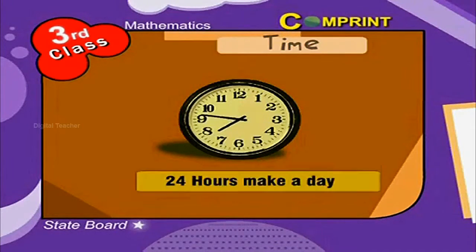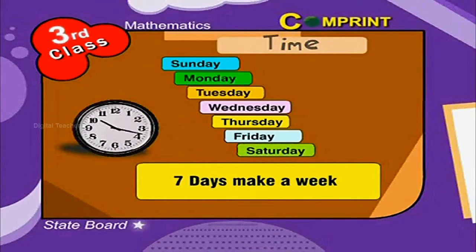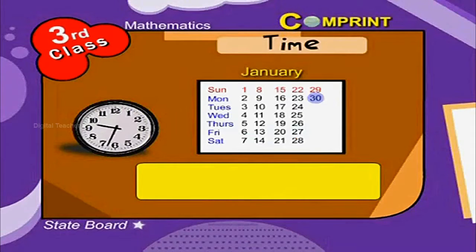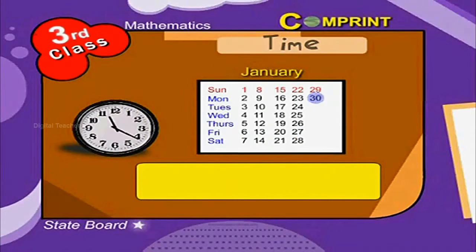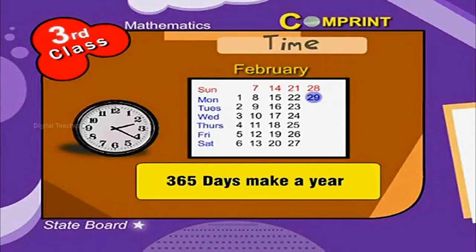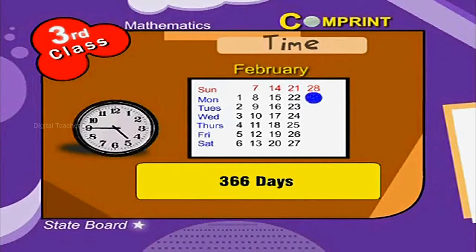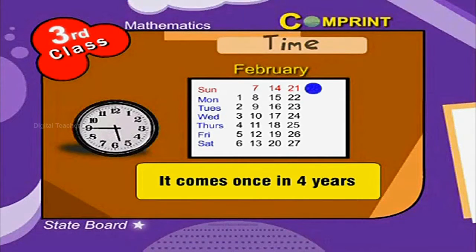24 hours make a day, 7 days make a week, 30 days make a month, and 365 days make a year. But a leap year has 29 days in February and 366 days in that year. It comes once in 4 years.